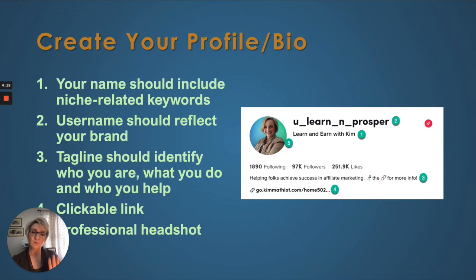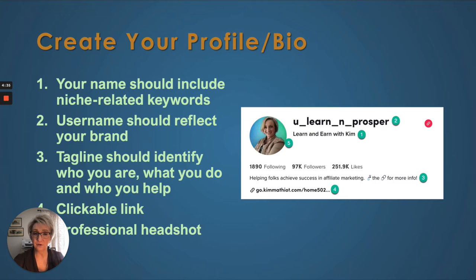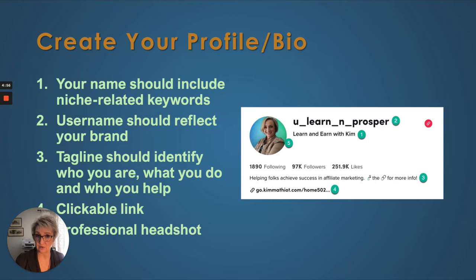The next thing is to create your profile and your bio. There are five parts to your profile. One is your name — that should include niche-related keywords. Mine is 'Learn and Earn with Kim,' so 'learn' and 'earn' are those keywords. Two is your username. You cannot change your username, so once you select it, that is what it's going to be. You can change your name, but not your username. If you want a different username, you've got to start a new account. It should also reflect your brand — for me, that's 'Learn and Prosper.'